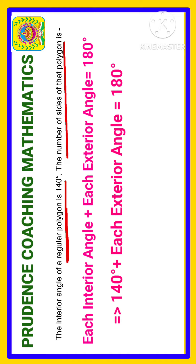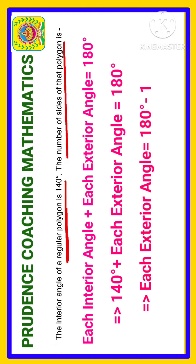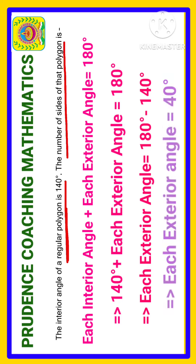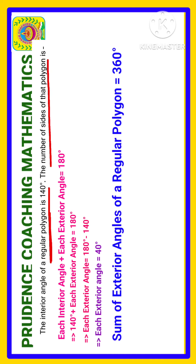From there we can find the exterior angle. Since 140 was on the positive side, moving it to the other side gives minus 140. So 180 minus 140 gives us 40 degrees — that is each exterior angle.